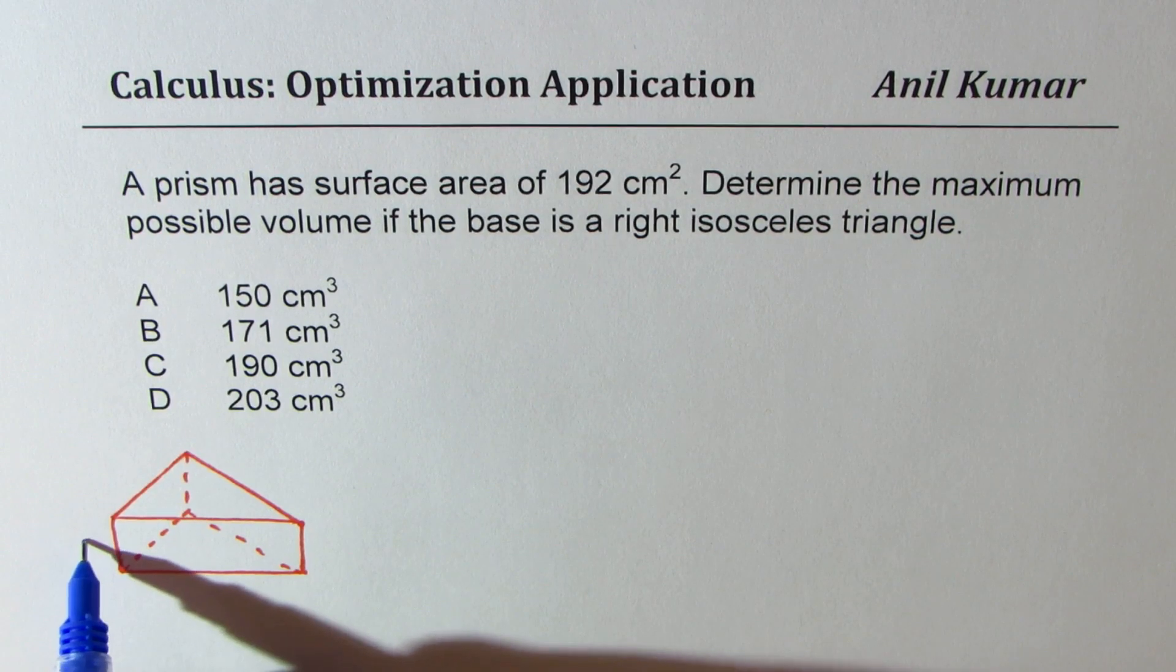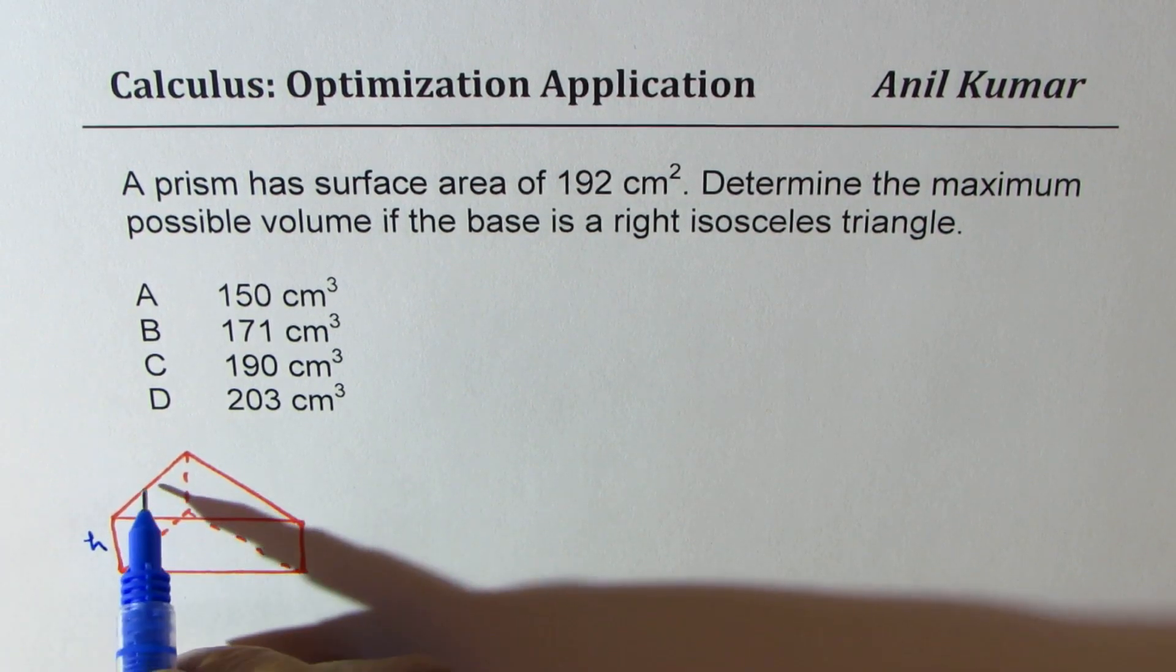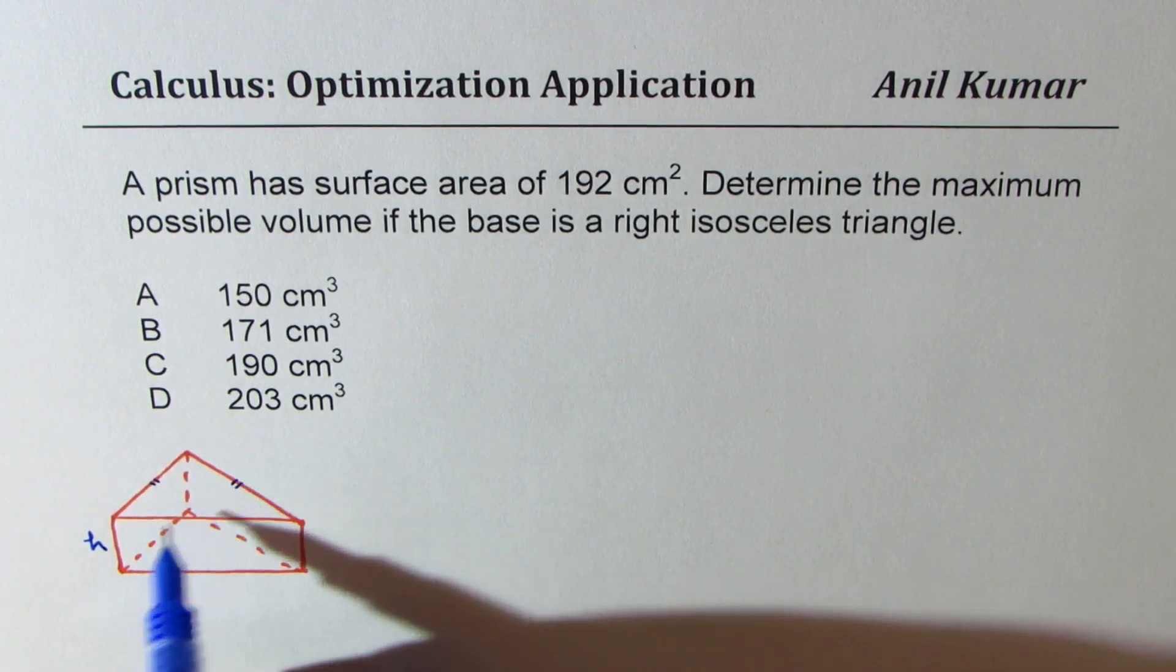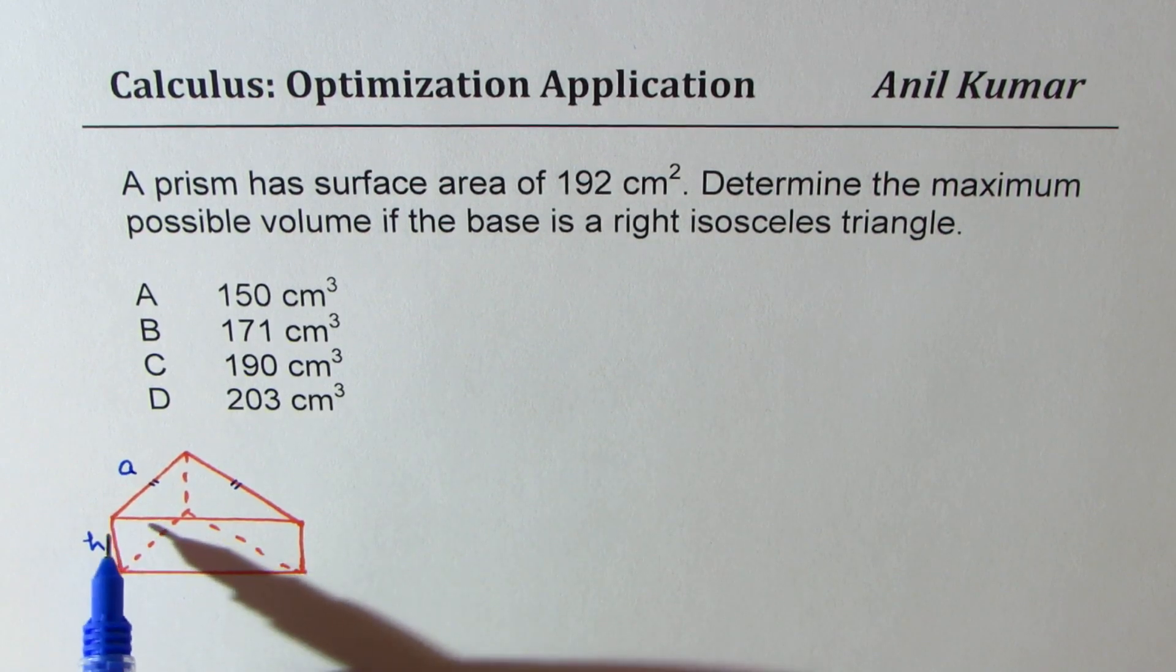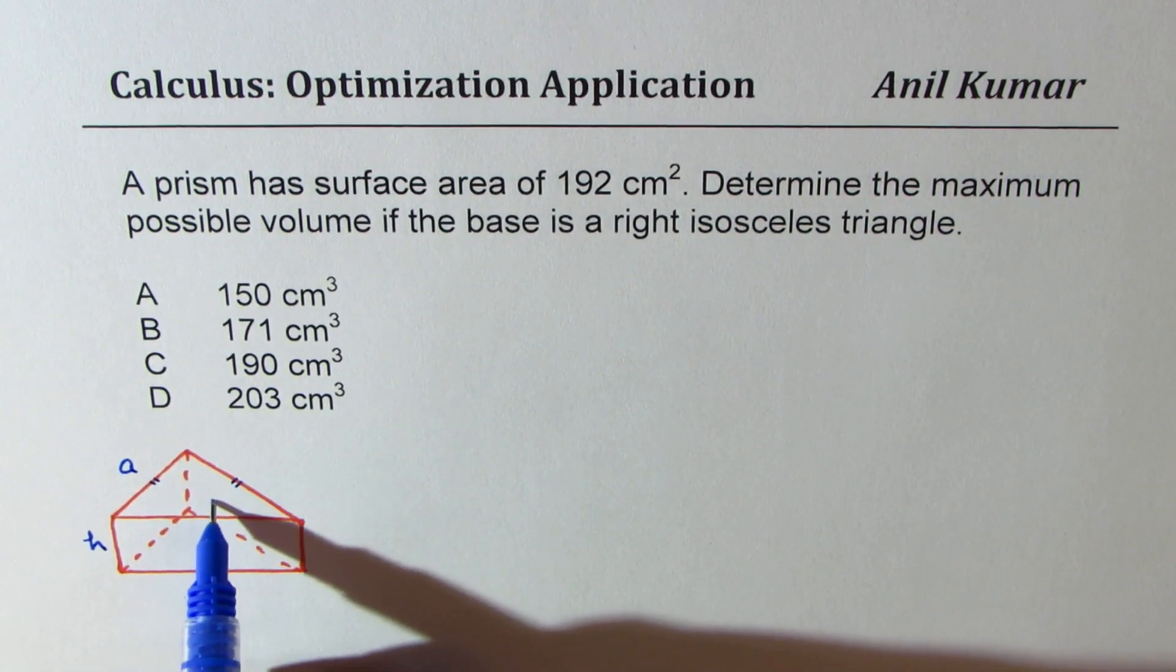Now let us say that height is h of the prism triangle and let us give side length of a to each side of this isosceles triangle. Now what is going to be the other side, let's call this as b.